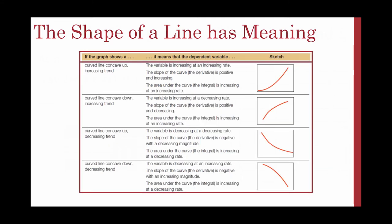A curved line that is concave up represents an increasing trend. Your variable is increasing at an increasing rate. The slope of the curve is positive and increasing, and the area under the curve is increasing at an increasing rate.